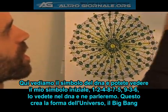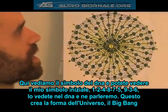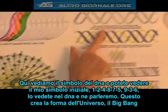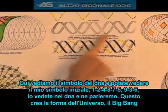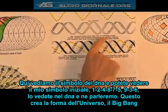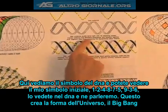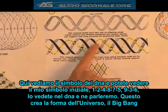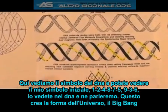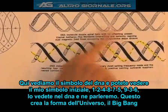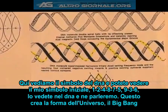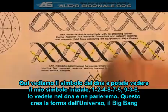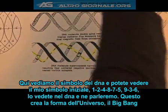Just so you can look — here's the DNA symbol, and you can see that initial symbol of enlightenment right in here: 1, 2, 4, 8, 7, 5, and here's your 9, 3, 6. You can actually see it in the DNA, but we're not going to go into that right now.